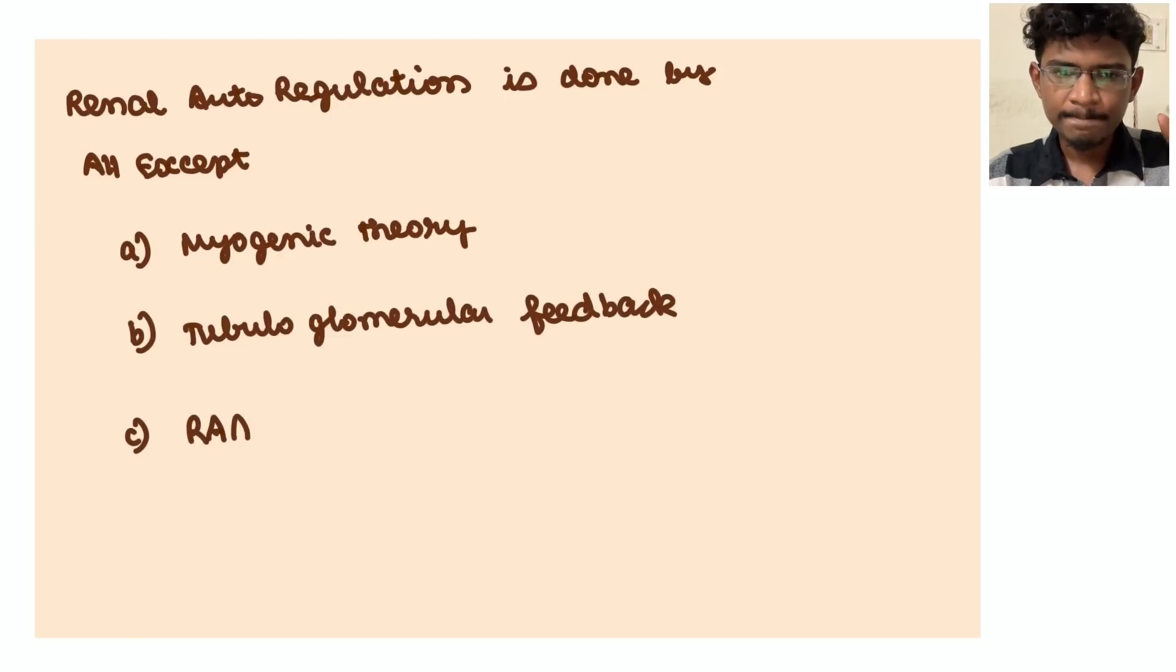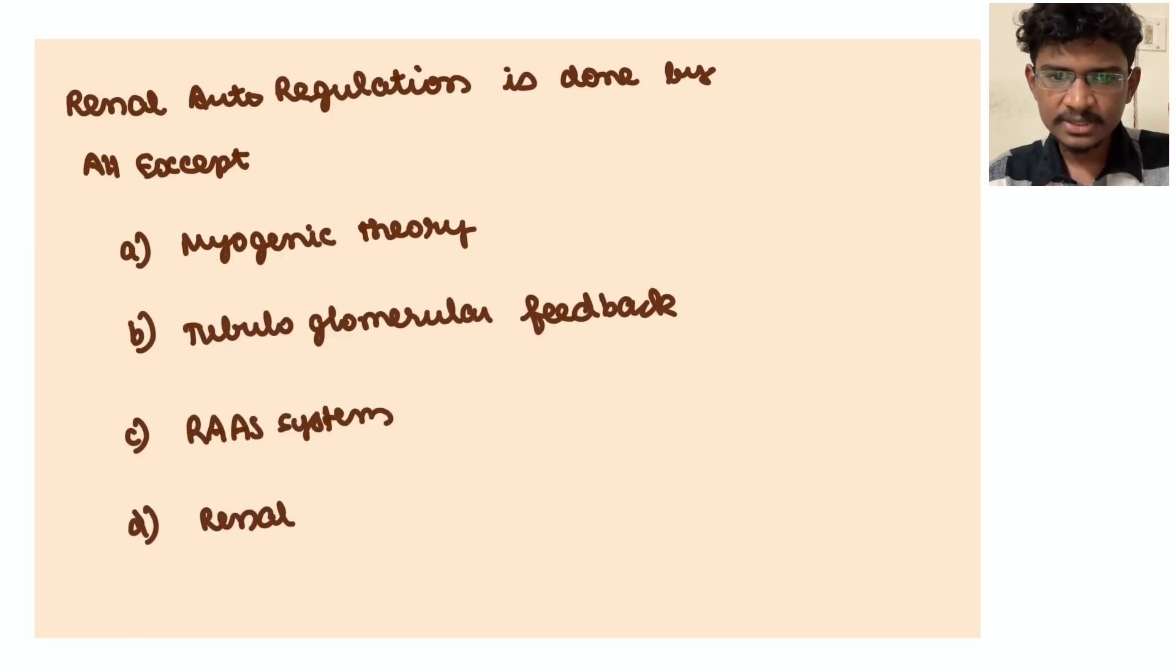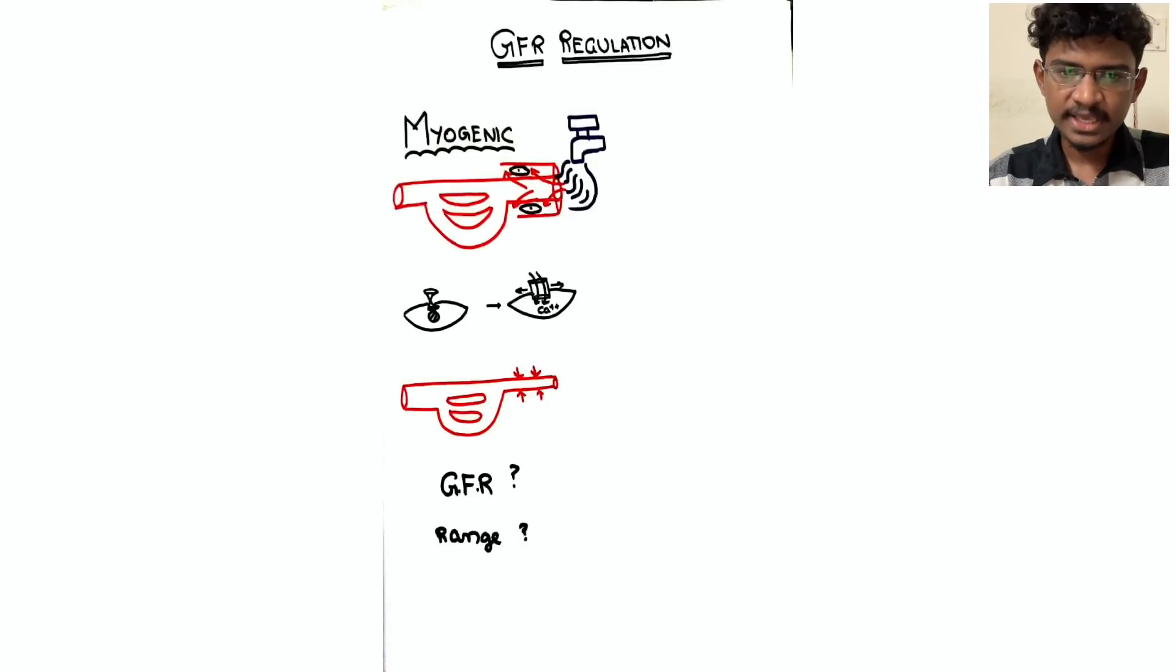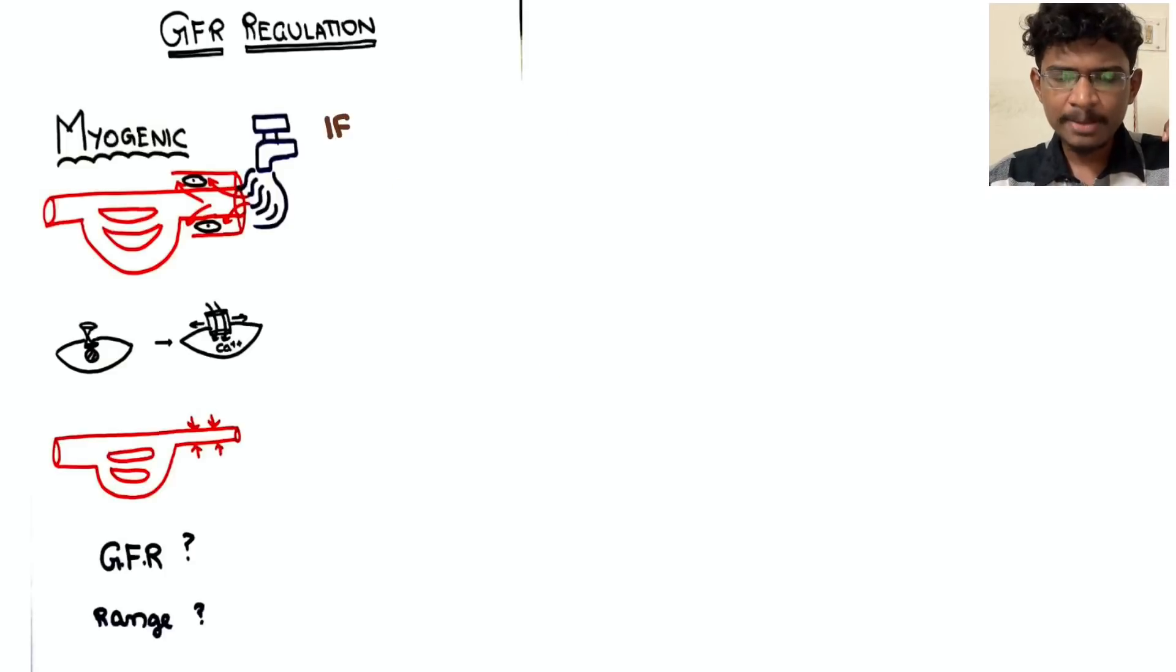Next: renal autoregulation is controlled by all the mechanisms except - myogenic, tubuloglomerular feedback, renin-angiotensin system angiotensin 2, or renal sympathetic nervous system activity?